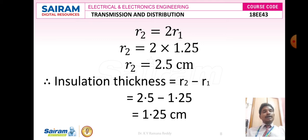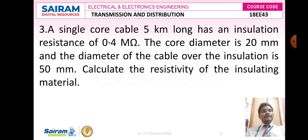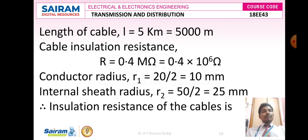So the insulation thickness for the given conductor is 1.25 centimeter. Now Problem 3: a single core cable 5 kilometers long has an insulation resistance of 0.4 mega ohms. The core diameter is 20 mm and the diameter of the cable over the insulation is 50 mm. Calculate the resistivity of the insulating material.